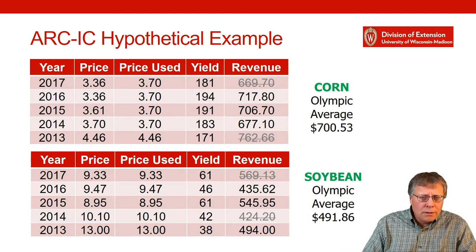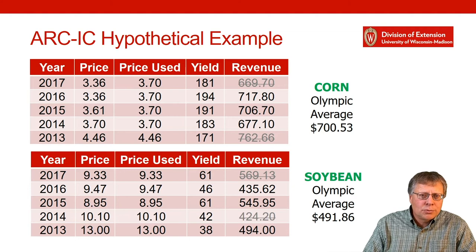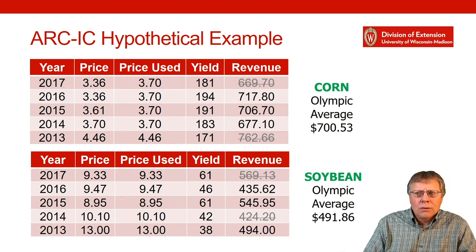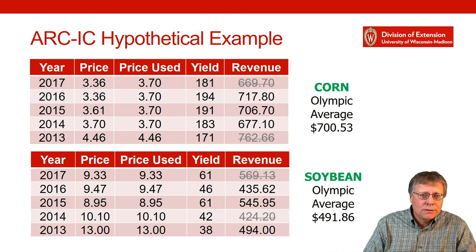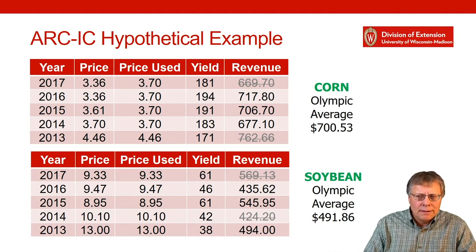Those yield numbers are hypothetical — I've made up five yields for corn and five for soybeans for a typical farm. You take the yield each year times that price, so for 2017 it's $3.70 times 181 bushels per acre, giving $669.70 per acre. For soybeans, it's $9.33 times 61 bushels per acre, giving $569.13. Then you drop the high and low for the Olympic averaging process. For corn, the result is $700.53, and for soybeans it's $491.86.